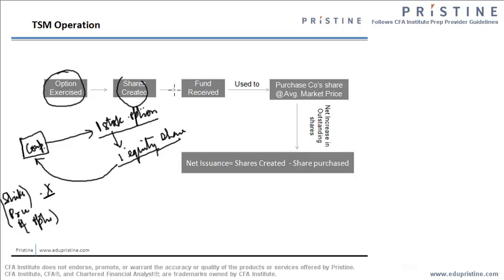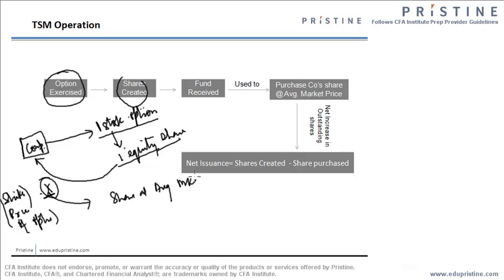This X, which is the fund received, is not kept in the treasury of the company. Instead, it is used to buy the shares of the same company from the market at the average market price. So with this X amount, the company will try to buy back its shares at the average market price, denoted as MP. The number of shares that would be bought back is given by X divided by the market price, or X/MP.